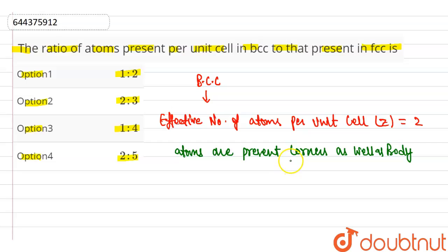The contribution at each corner is 1/8, and 8 atoms are present at corners, so that's 8 times 1/8. Plus, the contribution of the body center is 1, and 1 atom is present at the body center, so that's 1 times 1. Solving this, we get 2. So this is the effective number of atoms per unit cell.